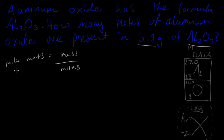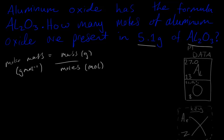Molar mass has units of grams per mole, mass has units of grams, and moles has units of mol. For this question we only have the mass, but we can find the molar mass because we know the formula and we have the periodic table. Molar mass is basically the same as relative formula mass but with the units added on.